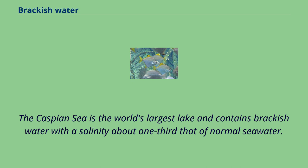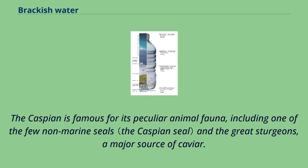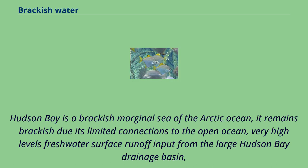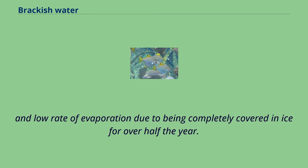The Caspian Sea is the world's largest lake and contains brackish water with a salinity about one-third that of normal seawater. The Caspian is famous for its peculiar animal fauna, including one of the few non-marine seals and the great sturgeons, a major source of caviar. Hudson Bay is a brackish marginal sea of the Arctic Ocean; it remains brackish due to its limited connections to the open ocean, very high levels of freshwater surface runoff from the large Hudson Bay drainage basin, and low rate of evaporation due to being completely covered in ice for over half the year.